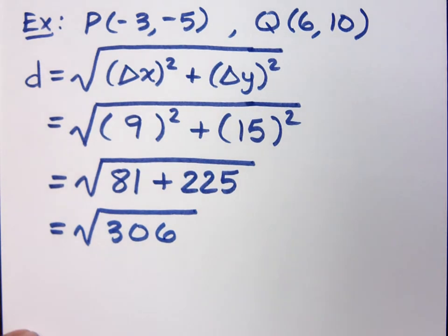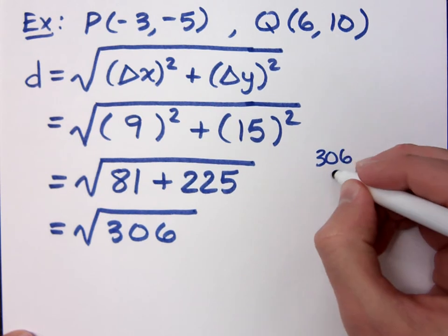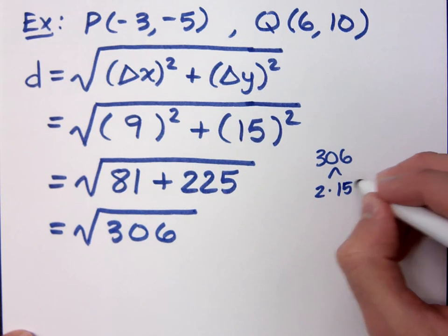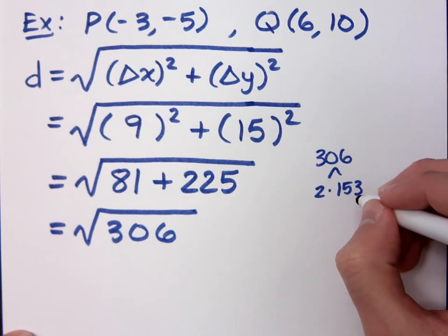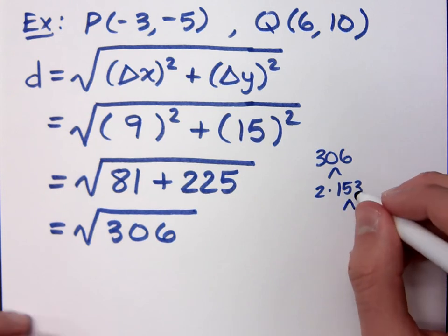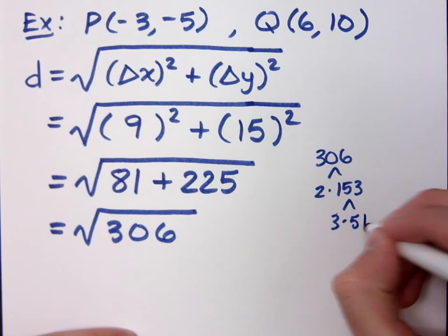I'm going to do that off here on the side. 306: 2 goes in here 153 times. 2 doesn't go into this anymore, does it? So we better use 3. 3 goes in 51 times.